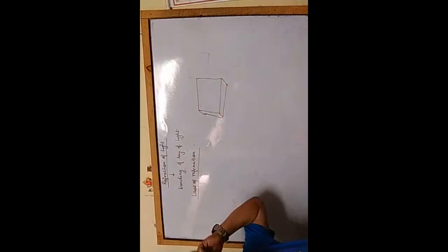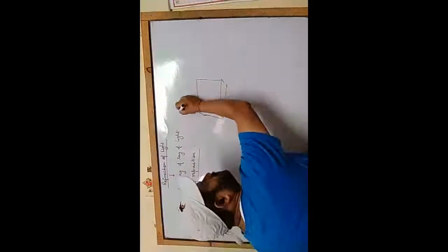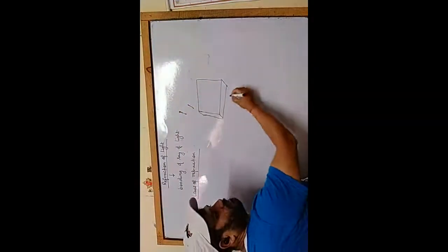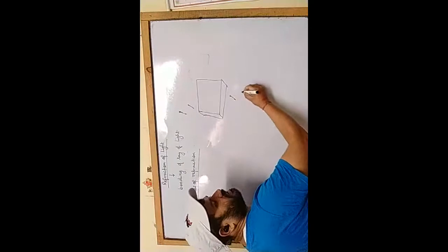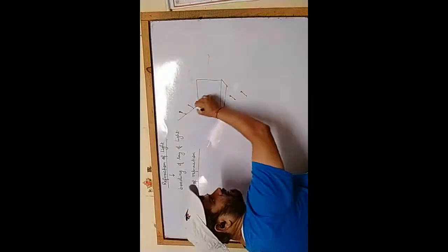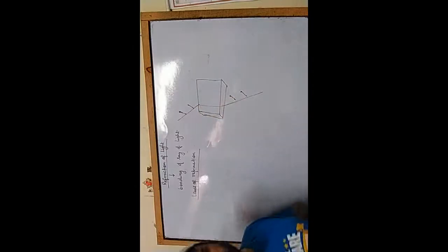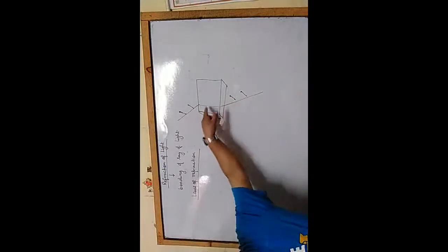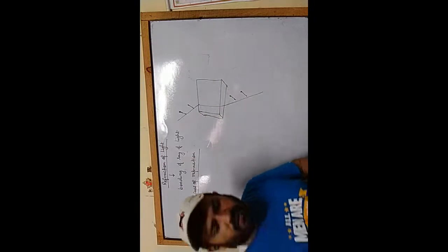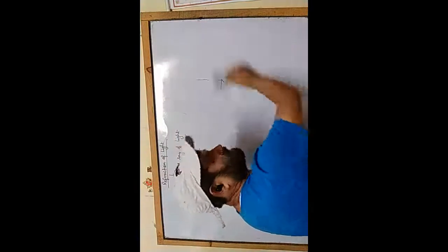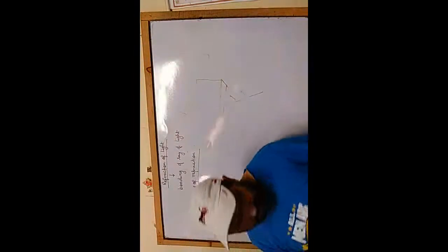If you take this glass slab and put two pins here and start observing the pins — when the pins appear to be in a straight line, you put two more pins and draw it. This is basically the practical which you will be doing. But here we are not talking about the practical, because to do the practical theoretically is somewhat impossible to understand. When you actually do it, you will feel better about it.